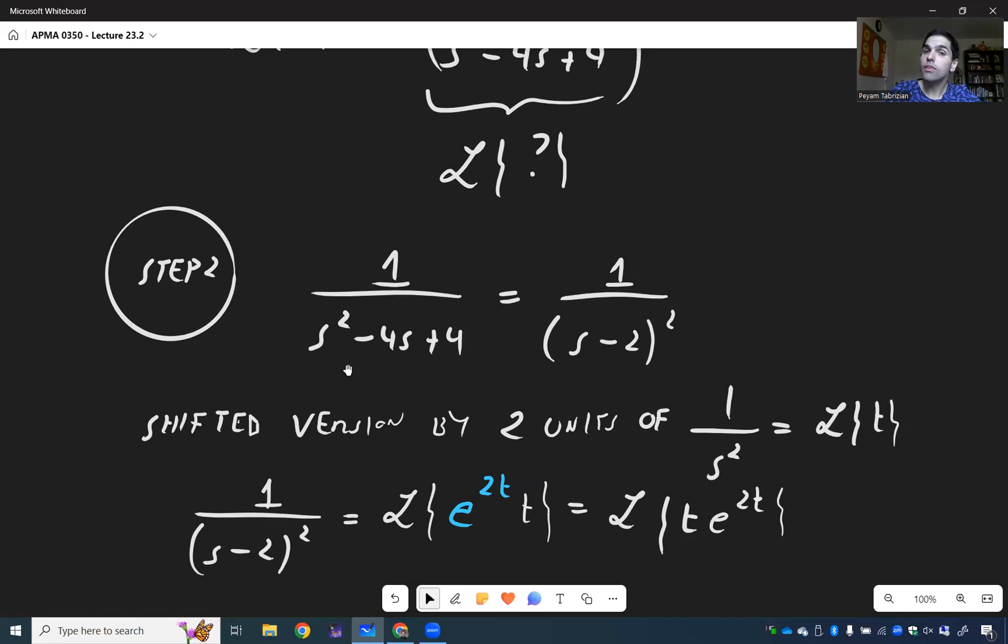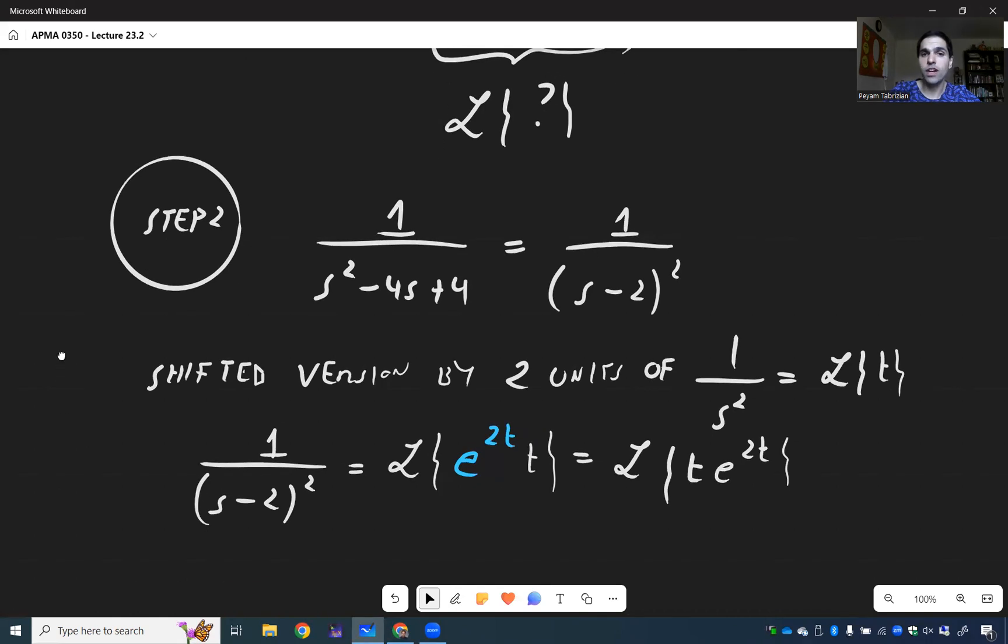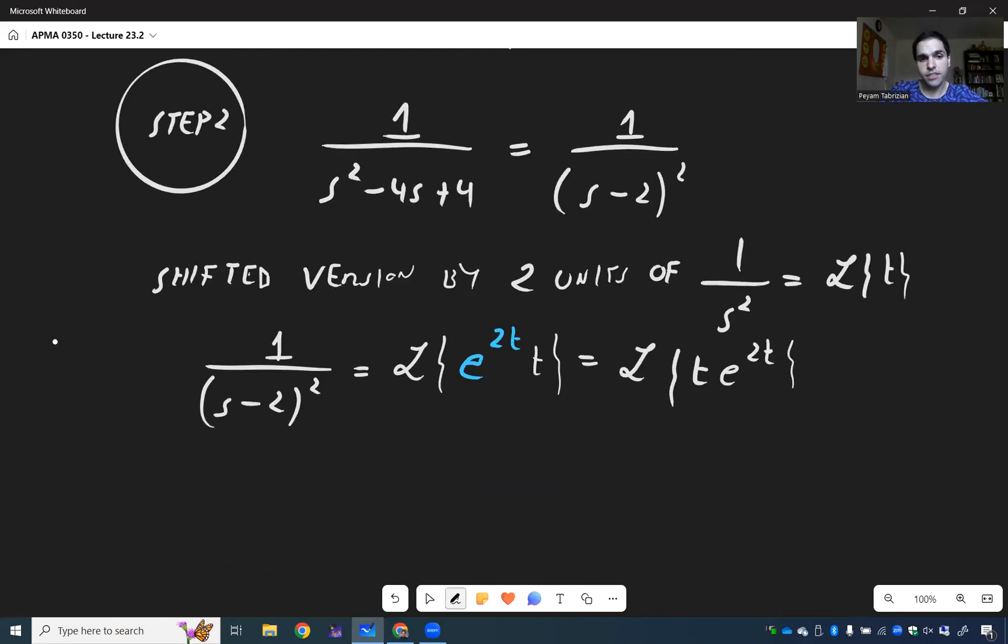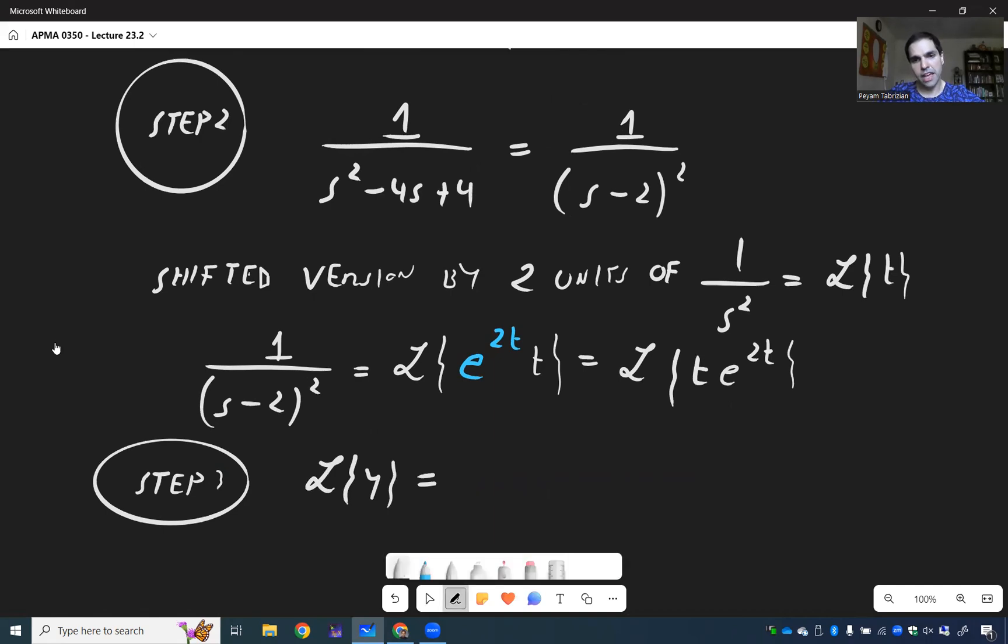And this is good. We wrote this 1 over S squared minus 4S plus 4 as a Laplace transform. And now the last step is just to combine everything. So L of y now becomes L of t e to the 2t times L of tangent of t.